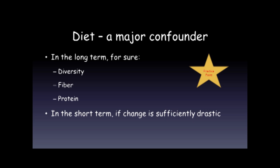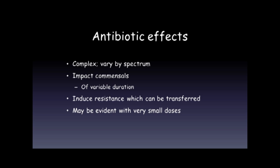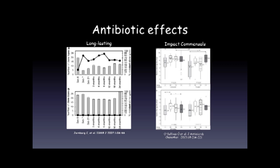How about antibiotic effects? They are complex and will obviously vary by the spectrum of impact of an antibiotic, whether it's broad or very narrow spectrum. But the big problem with antibiotics, no matter how narrow their spectrum, is that they will influence and impact your normal commensals. We now know, contrary to what we thought before, that antibiotic effects are of variable duration — some are actually quite prolonged. We can also induce resistance through transferal via bacteria themselves, and antibiotic effects may be evident even with very small doses.